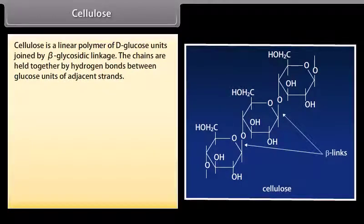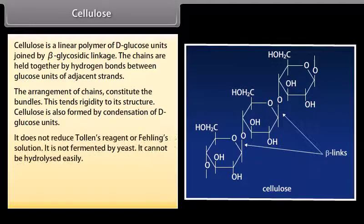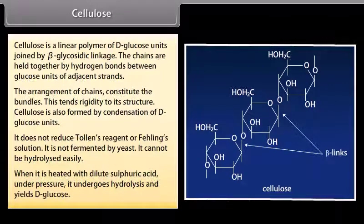Cellulose is a linear polymer of D-glucose units joined by beta-glycosidic linkage. The chains are held together by hydrogen bonds between glucose units of adjacent strands, and the arrangement of chains constitutes bundles, lending rigidity to its structure. Cellulose does not reduce Tollens' reagent or Fehling's solution, is not fermented by yeast, and cannot be hydrolyzed easily. When heated with dilute sulfuric acid under pressure, it undergoes hydrolysis and yields D-glucose.